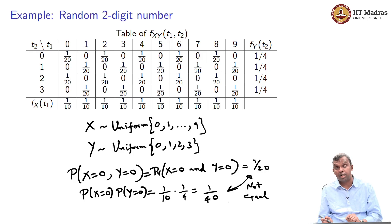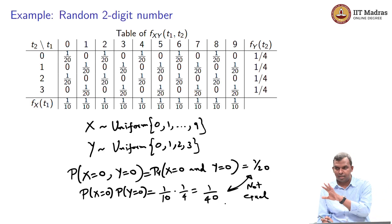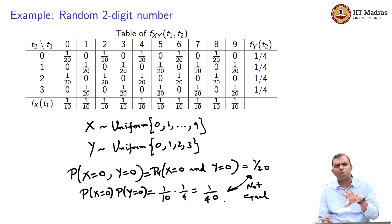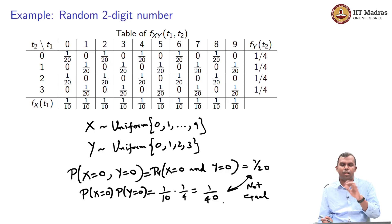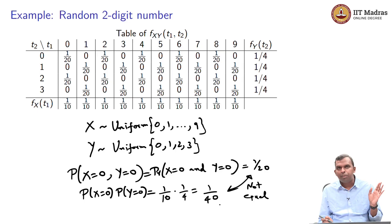From the joint PMF, you can find the marginals and determine independence of events defined using the random variables. Quite often you may define a joint PMF and then ask: is this event independent of that event? Calculate that from the joint PMF — find the individual probabilities, find the probability of the intersection, and check if the product condition is satisfied. The joint PMF is a powerful tool that gives you all the data you need to work out any problem with two random variables.